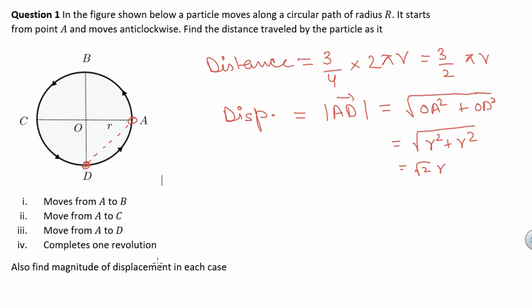In the fourth part of the question, we have to find the distance and displacement when the particle completes one full revolution. In this case, distance would be equal to the circumference of the circle, which is 2πr. The displacement, which is the shortest distance between the initial and final point, is zero since the particle returns to point A.